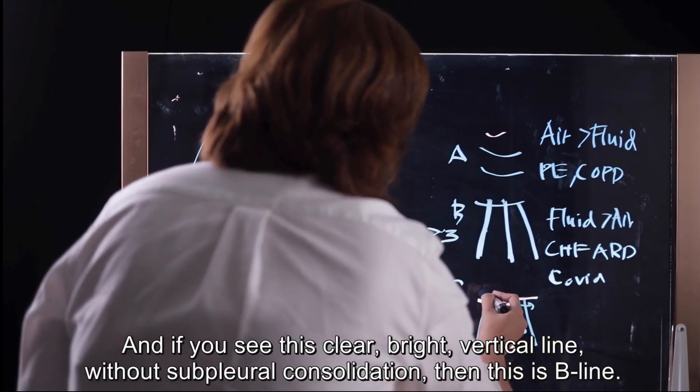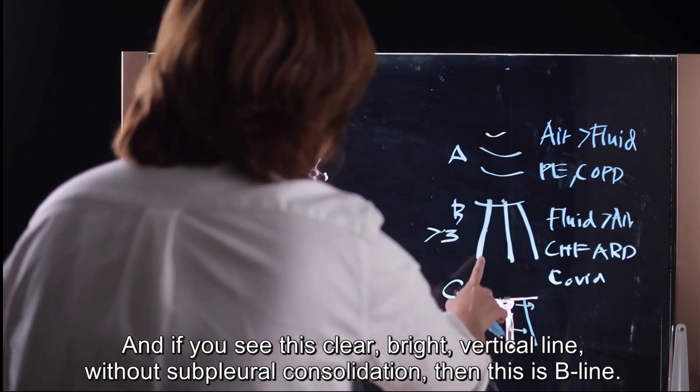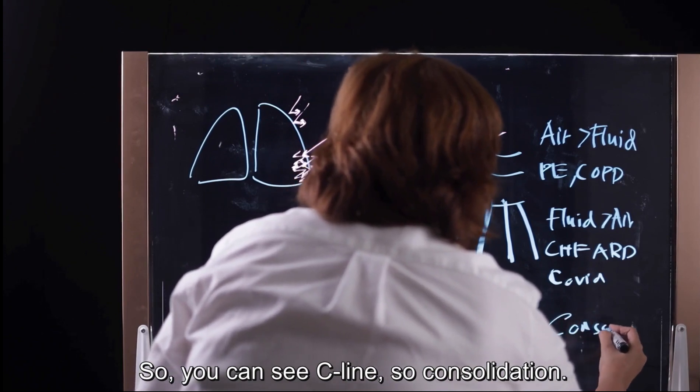And if you have this clear, white, vertical line which has no sub-pleural line consolidation, this is B-line. So you can see C-line because it is C, so consolidation.